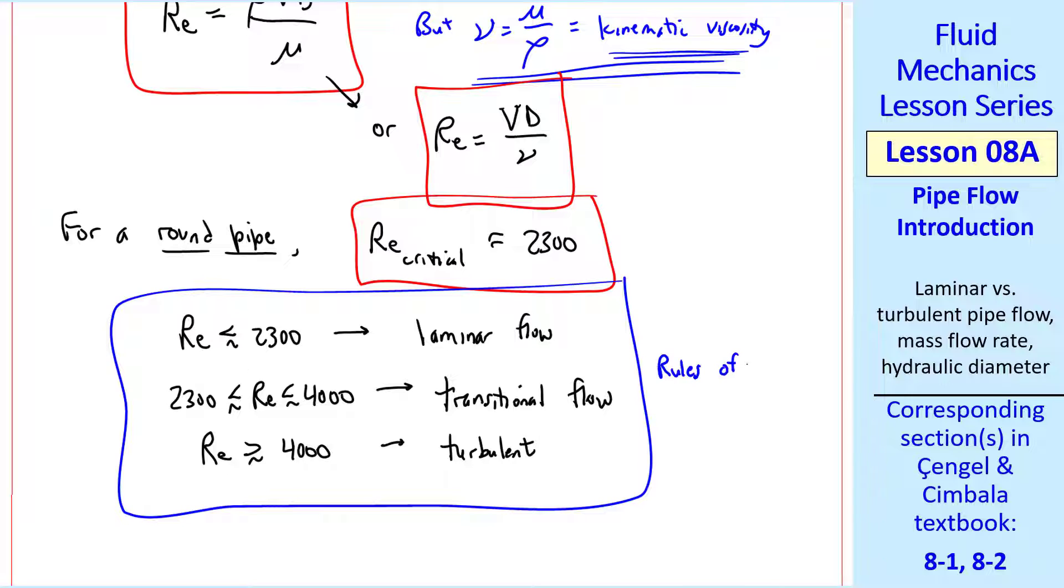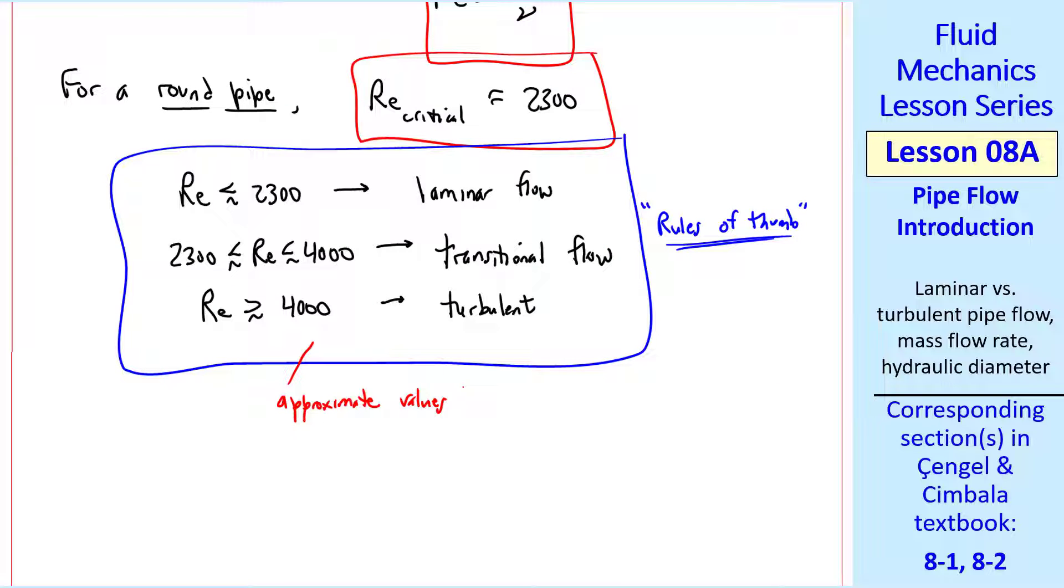These are just so-called rules of thumb, meaning they are approximate values. You can have turbulent flow at Reynolds numbers in this range and sometimes even below 2300, if your pipe is very rough or if you have lots of vibrations and stuff like that. Likewise, you can have laminar flow to Reynolds numbers above 4000 if you have very smooth pipe walls and very carefully controlled inlet and very low vibrations. In other words, these are just approximate values, but we'll use them to define whether the flow is laminar or turbulent or transitional.